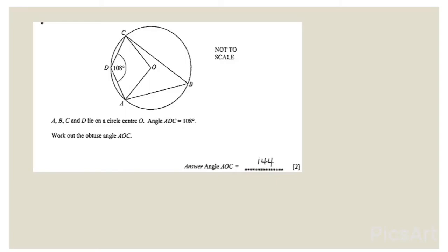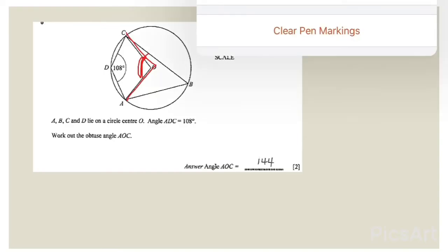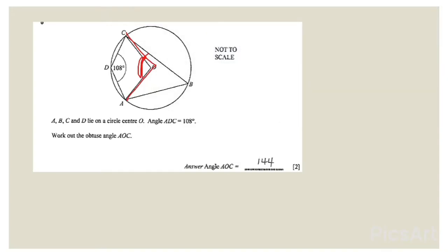This is the first question. A, B, C and D lie on a circle with center O. Angle ADC is equal to 108 degrees. Work out the obtuse angle AOC. So angle ADC is 108 degrees — that means this angle is 108 — and we have to find the obtuse angle AOC, which is this part. To find that, we need to apply the circle theorems. First we'll find the reflex part: the angle at the center is double, so 108 multiplied by 2 gives 216.